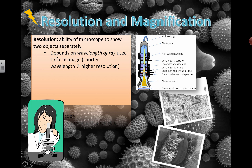You can't really get detailed images from your typical light microscopes. You can definitely see the outlines of cells, but you won't be able to see the insides of cells and the organelles and everything like that. You really need an electron microscope to do that.